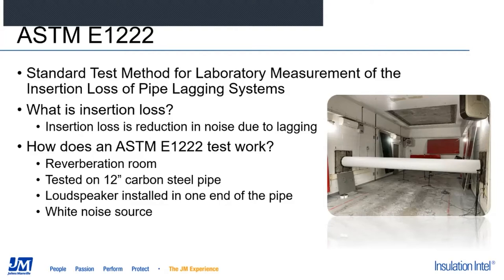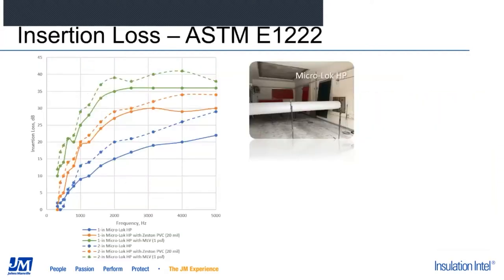Here are the results for insertion loss. On the horizontal axis we have frequencies in hertz — lower frequencies on the left and high frequencies on the right. Insertion loss is on the vertical axis, measured in decibels. The higher the insertion loss, the better it is, because that's the difference measured between the bare pipe and the system with treatments or lagging. The blue lines represent our Microlock HP system: the solid line is one inch and the dashed line is two inches. Two-inch Microlock HP performs better, as you can see the line is higher.